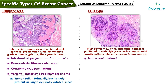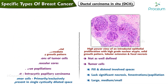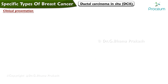The solid type is not as well defined as the other subtypes. It features tumor cells that fill and distend the involved spaces and lack significant necrosis, fenestrations, or papillations. The tumor cells may be large, medium, or small.